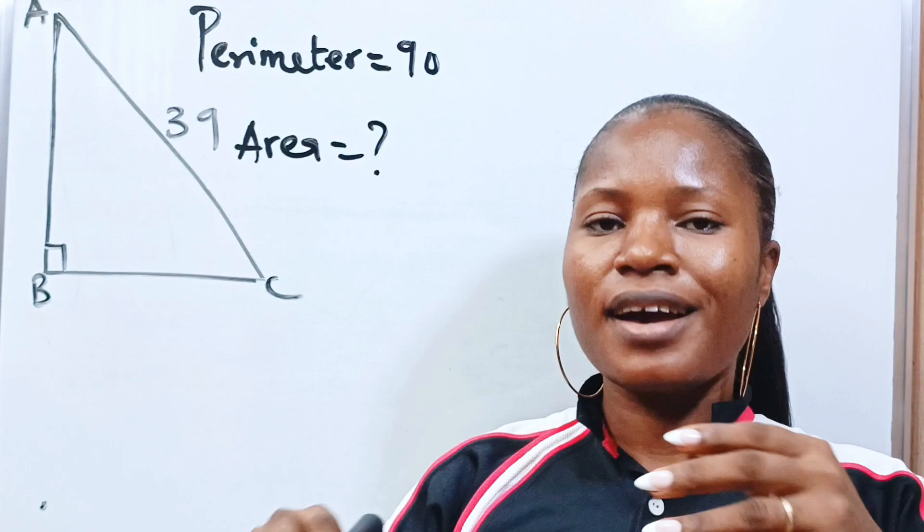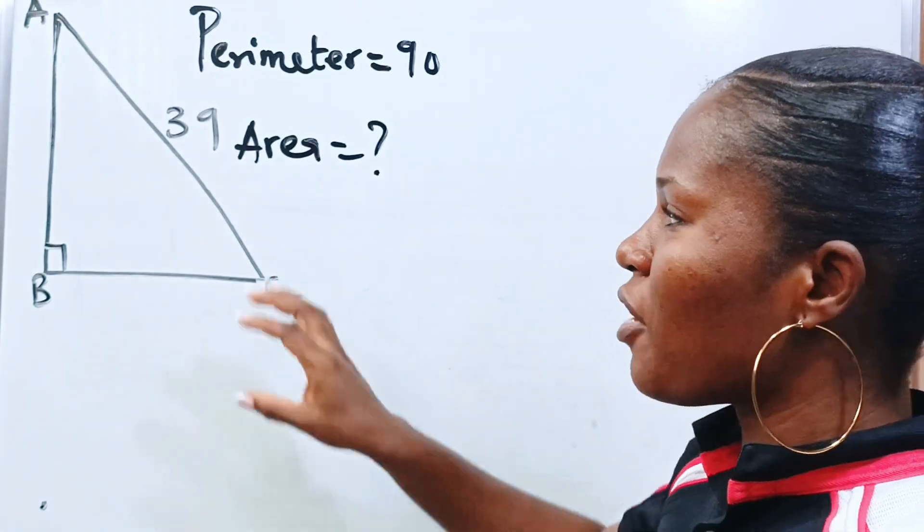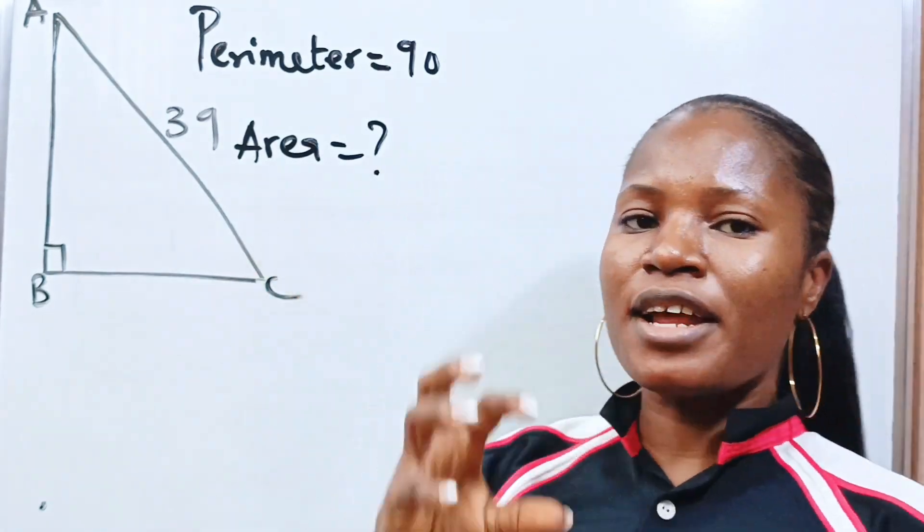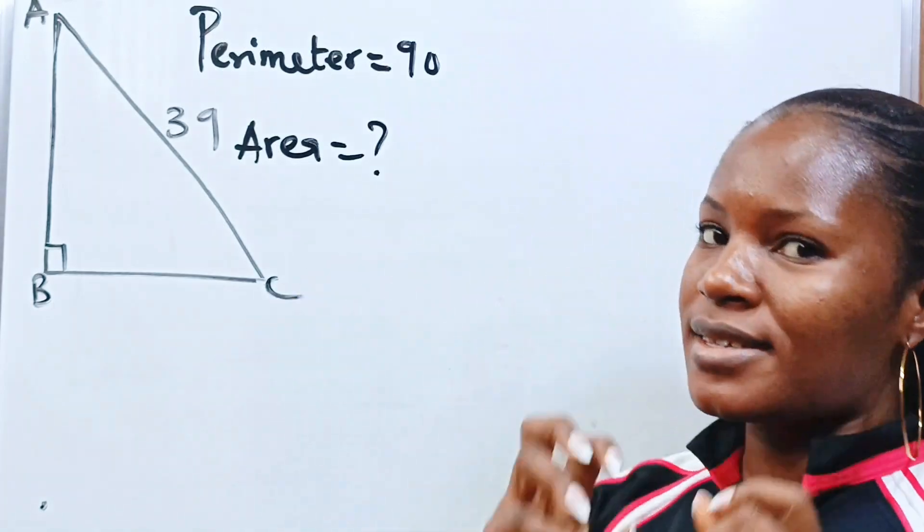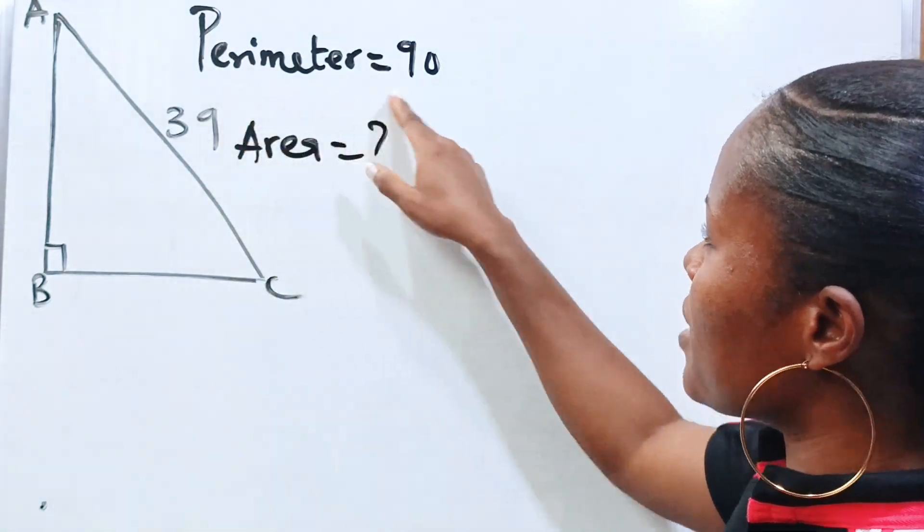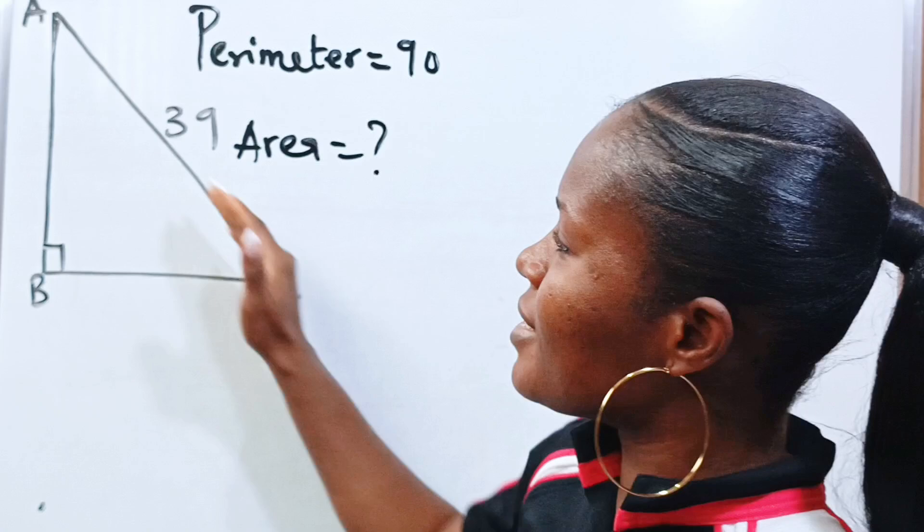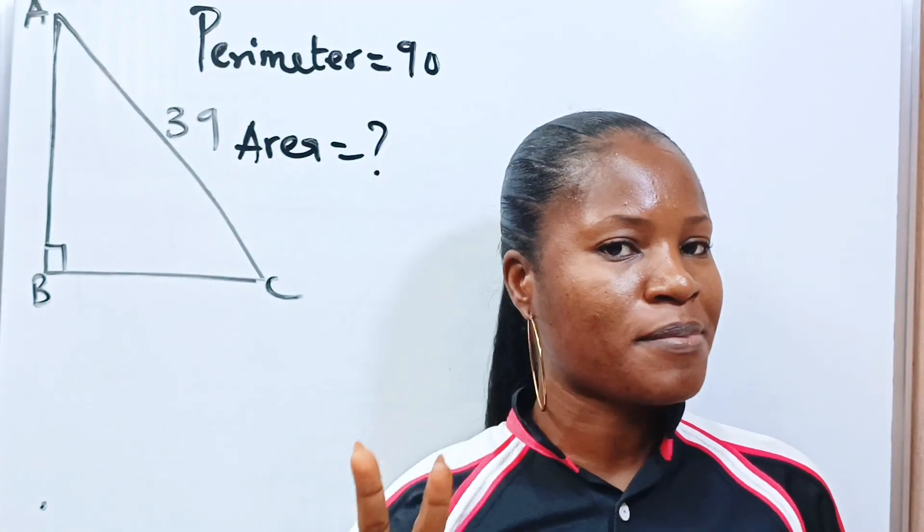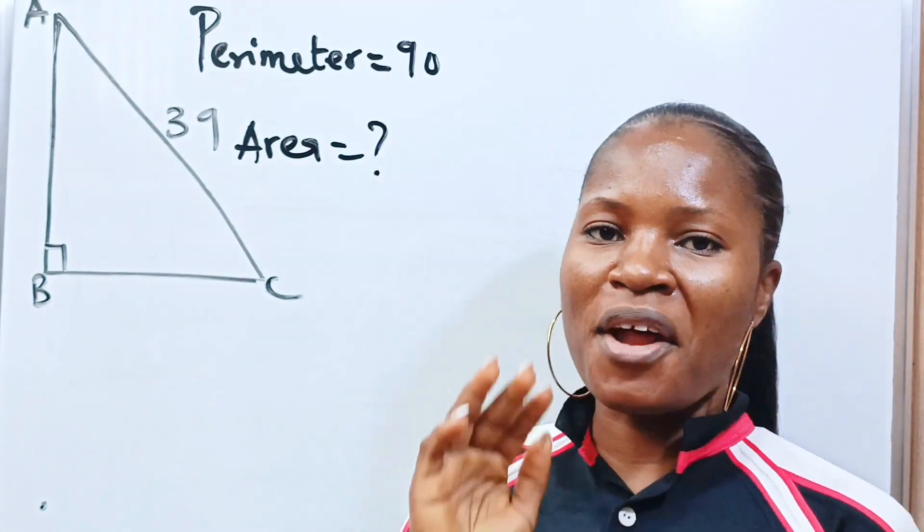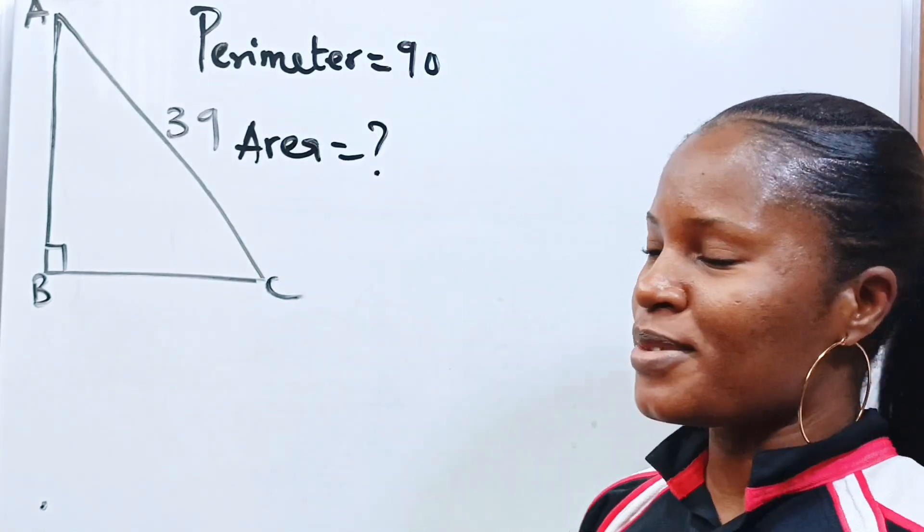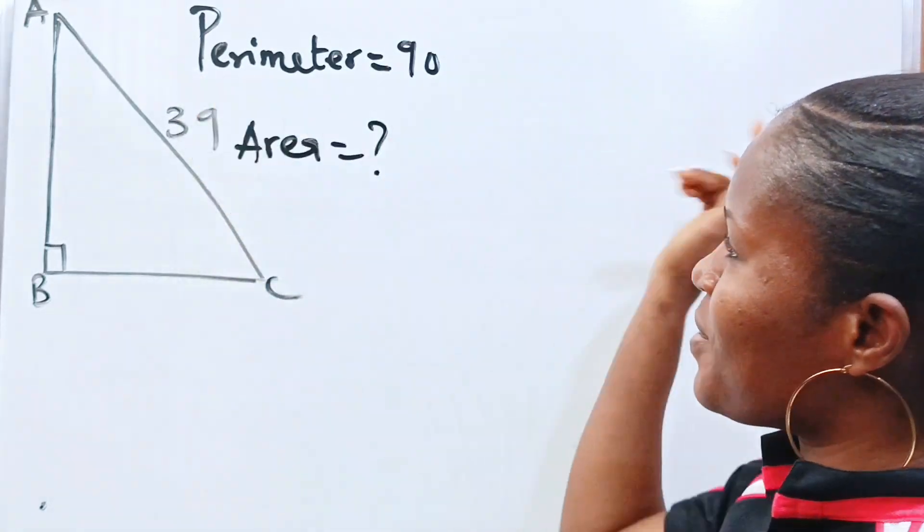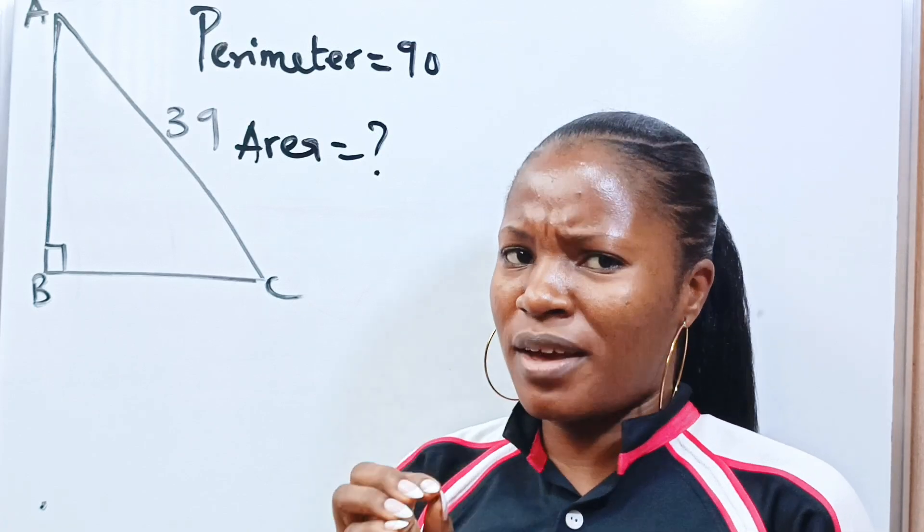Now first, every parameter given to us here is telling us how to get to our solution. For the examiner to give us the perimeter of this right angle and the hypotenuse is already telling us the two steps that we need to take in order to get the value of our area. What am I trying to say? First, can we start with perimeter and see what we have there?